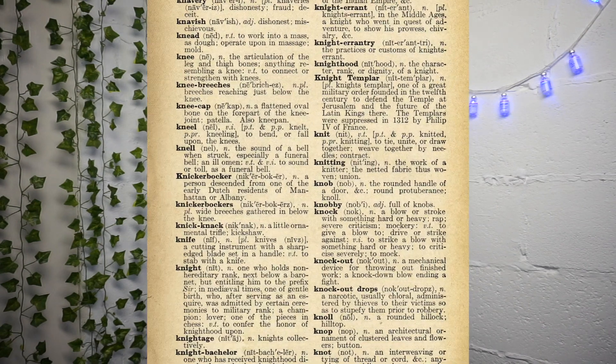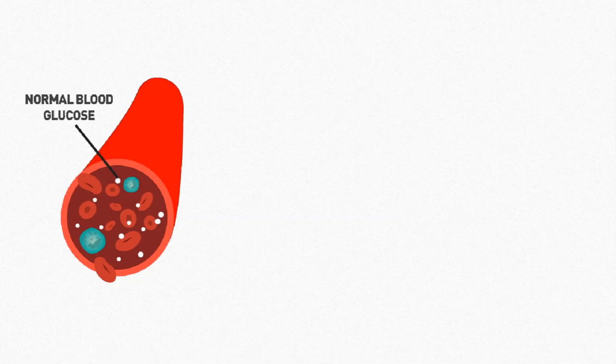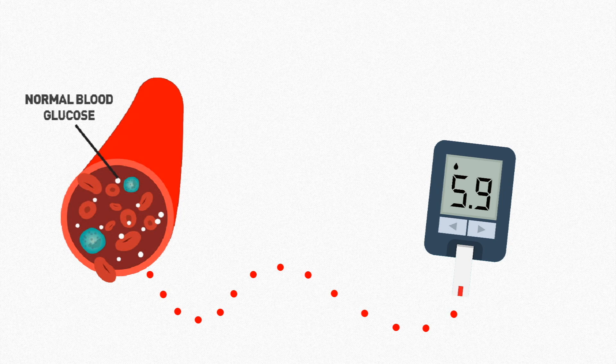Cambridge dictionary defines accuracy as the fact of being exact or correct. What does that mean when it comes to measuring glucose? There are two main methods of measuring glucose levels: using blood glucose meters and using continuous glucose monitors. We measure accuracy of both of them using mean absolute relative difference, or as it is more commonly known, MARD. MARD is not the only method of measuring accuracy but it is definitely the most commonly used — think of it as the English language of accuracy measurement.